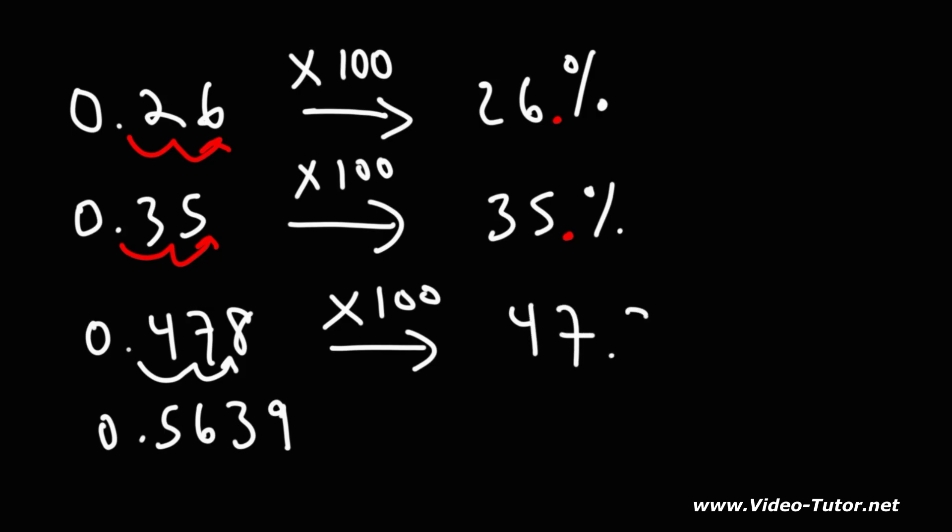So it's going to be 47.8%. Finally, for the last one, we just need to move the decimal point two units to the right. So 0.5639 as a decimal is 56.39%. That's how you can convert a decimal number into a percent.